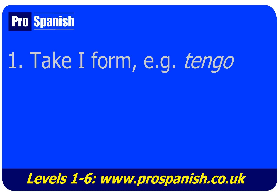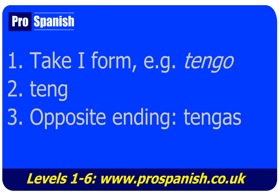Step one: take the I form of the verb. In the case of TENER (to have), start with 'I have' — that's TENGO. Take off the O, and then add the opposite ending of what it would normally be, given whether it's AR, ER, or IR. TENER is ER, so normally 'you have' ends in ES — TIENES. With the subjunctive, you do the opposite, as though it's an AR verb, so it ends in AS. Take TENG, add AS — TENGAS. So TENGAS is 'you have' subjunctive.